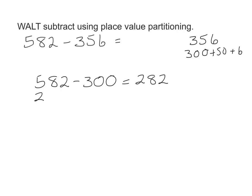Now we take our first subtotal, and from it we subtract the next partition, the 50. That gives us a second subtotal of 232.